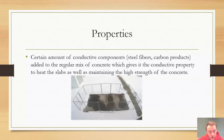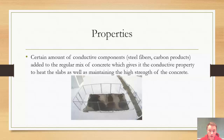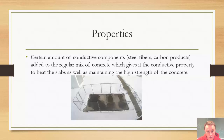Properties in conductive concrete include steel fibers and carbon products that are added to the regular mix of concrete, which gives it the conductive property to heat the slabs, while also maintaining the high strength that concrete originally has. As you see below, this is a controlled area where conductive concrete has been used. The fenced area on the sidewalk adjacent to it would normally be covered by snow, just like its surroundings, but it has been melted away through the heat produced by the conductive concrete.